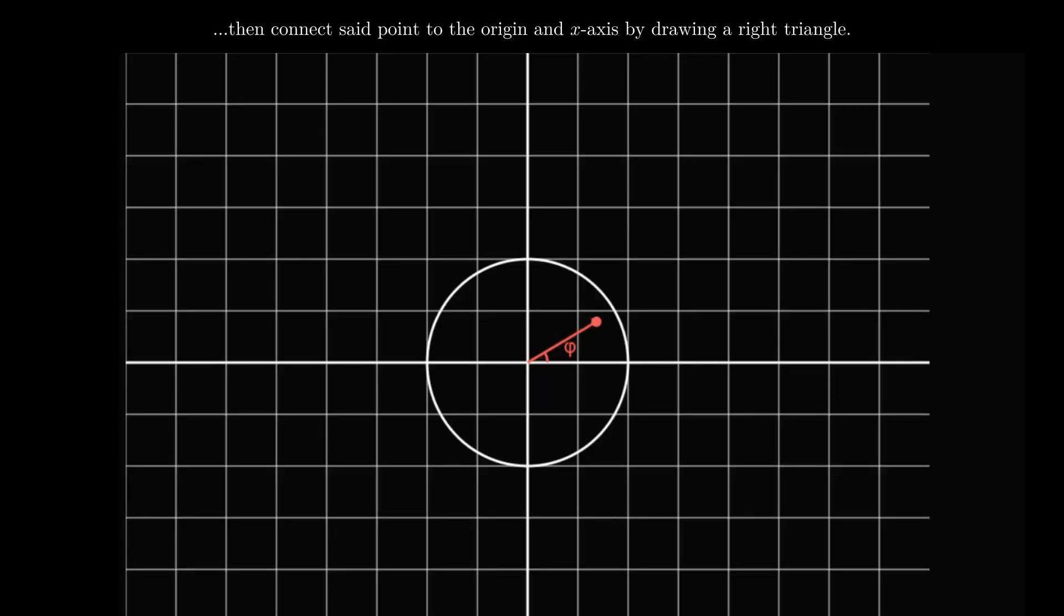Next, we'll draw a line from the point to the origin, then from the point down to the x-axis. Finally, we'll finish with a third line back to the origin.